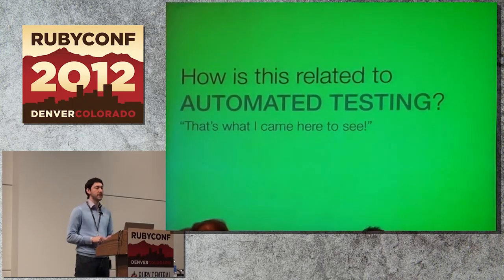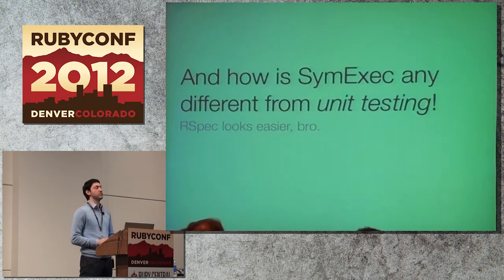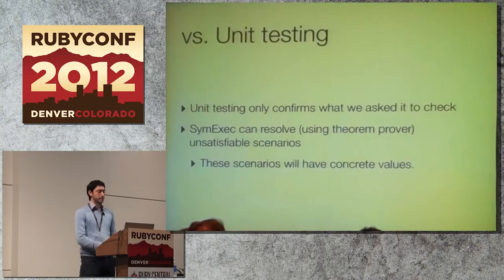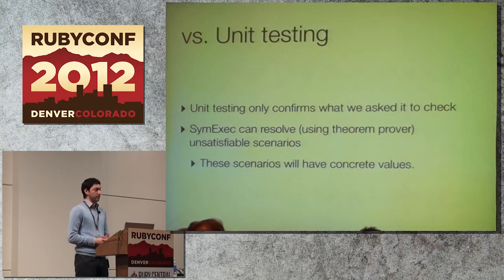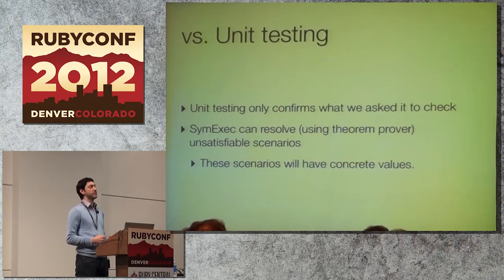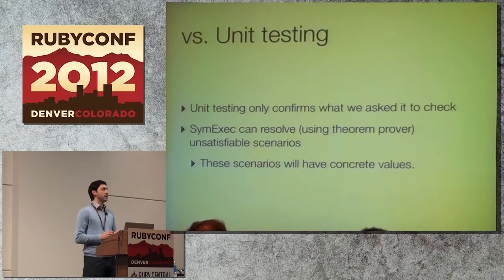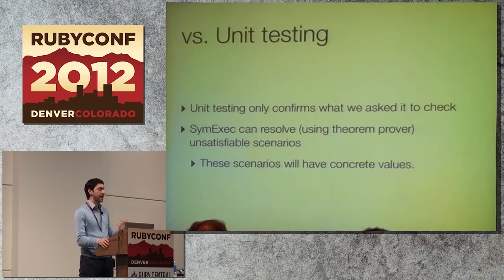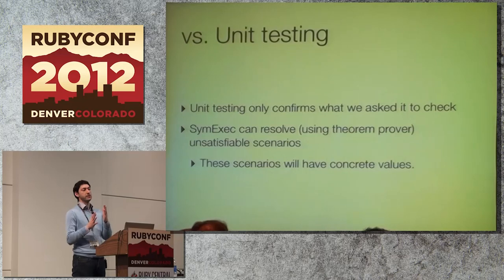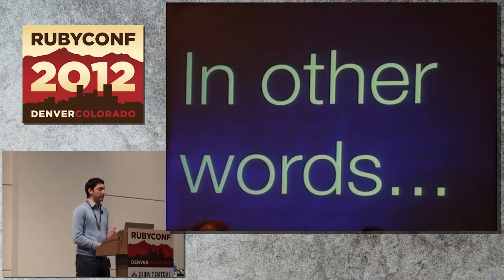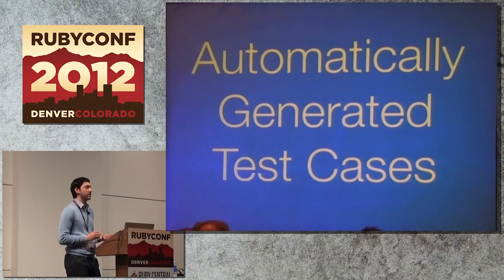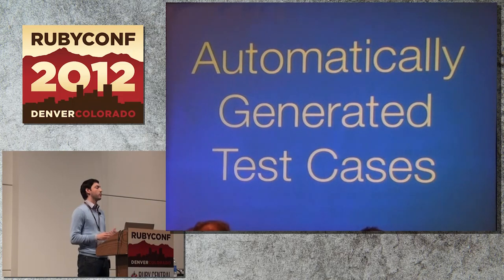How is this related to automated testing, and how is symbolic execution different from unit testing? Unit testing only confirms what we've asked it to check — if you check Fibonacci when n is two, you're only checking for that value. Symbolic execution doesn't use any concrete values on the first path, so it can run through and check all values. It can resolve values and figure out using heuristics or logic which values a function will not work on. In other words, it's automatically generating test cases for us — figuring out scenarios where our program will succeed or fail.